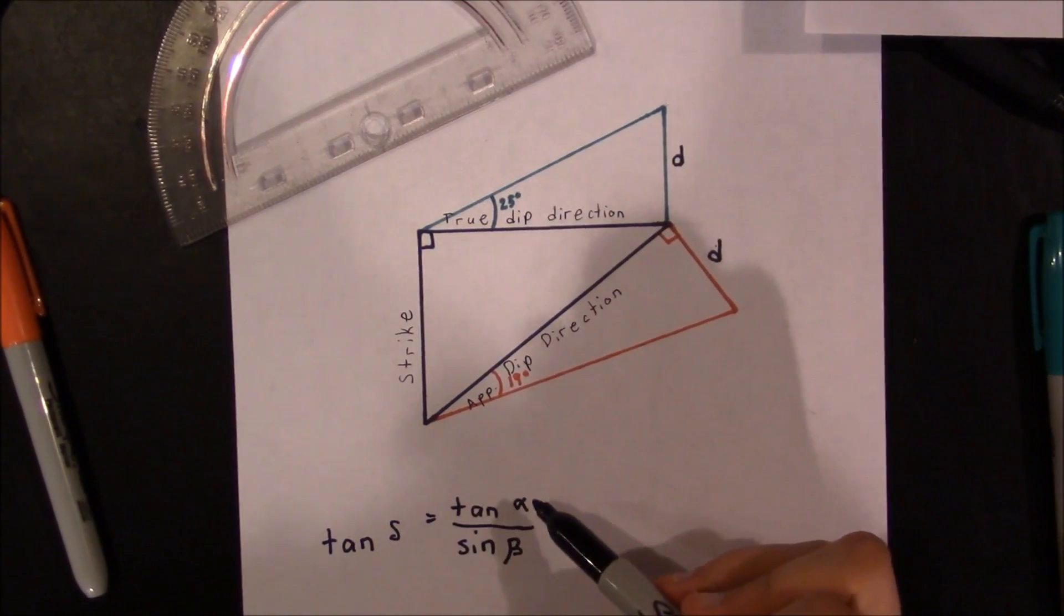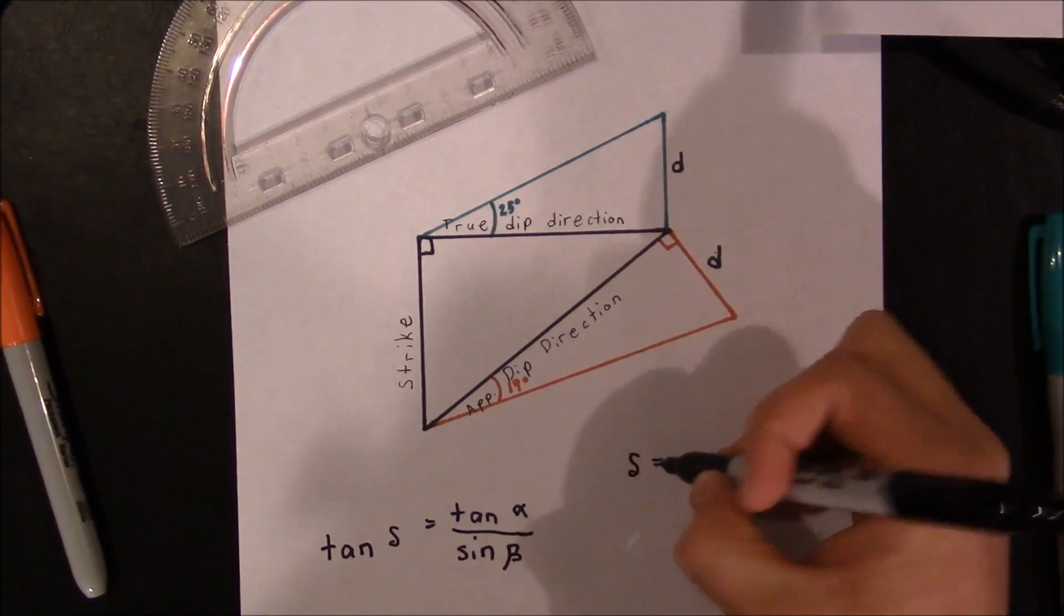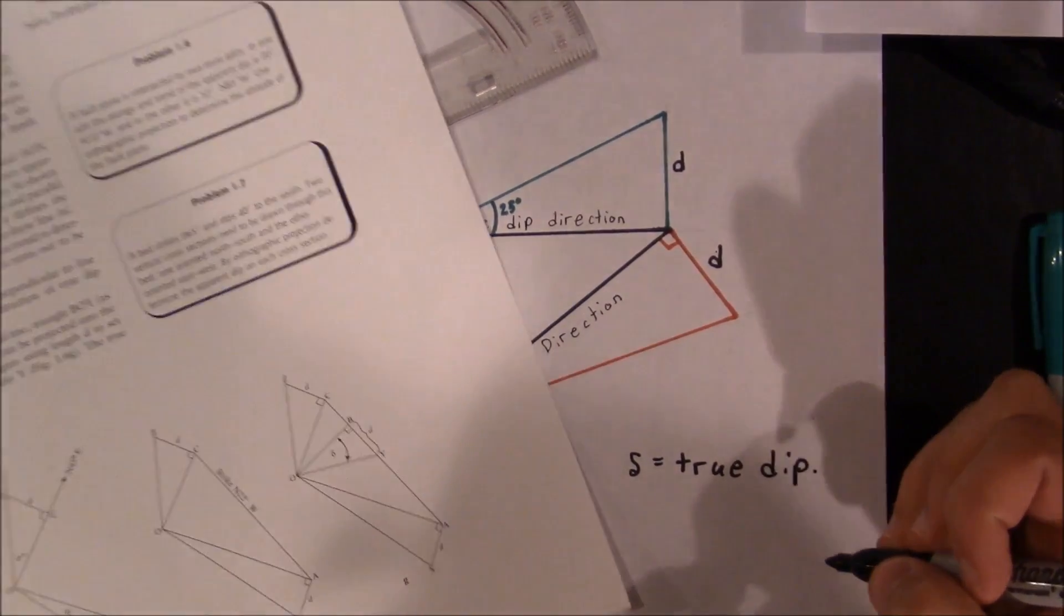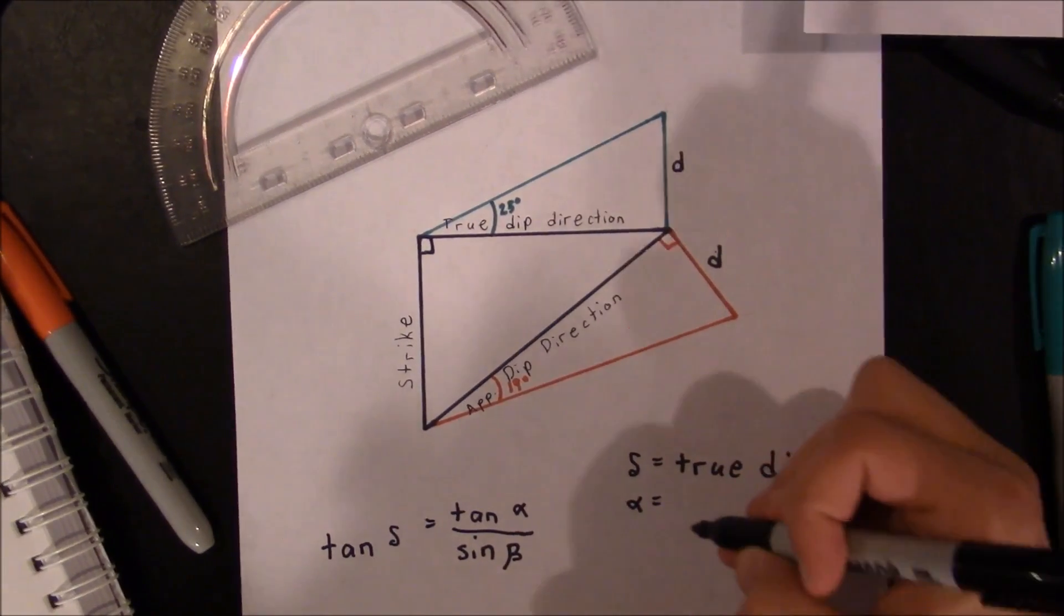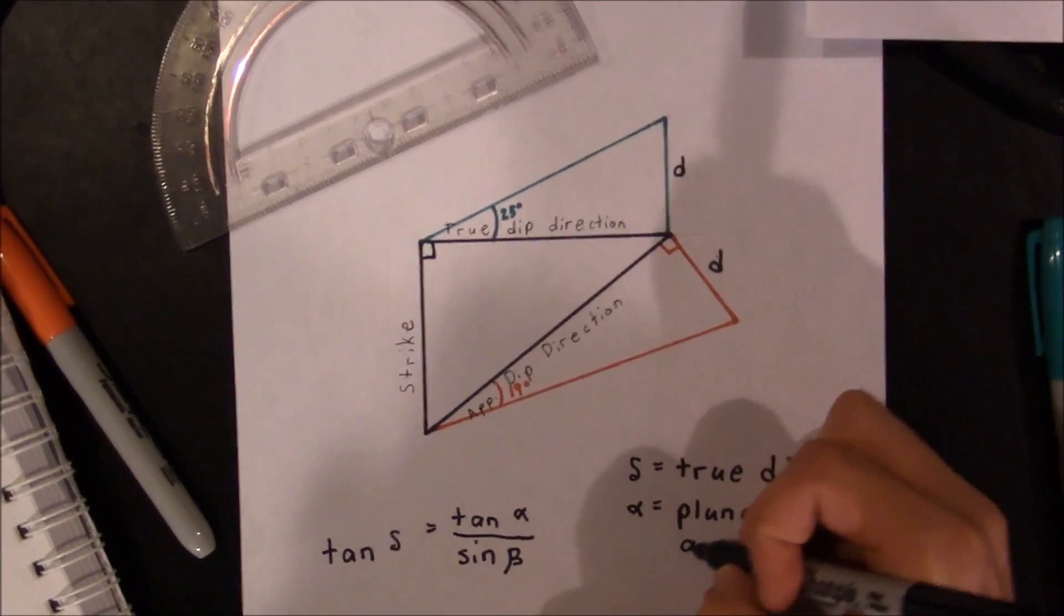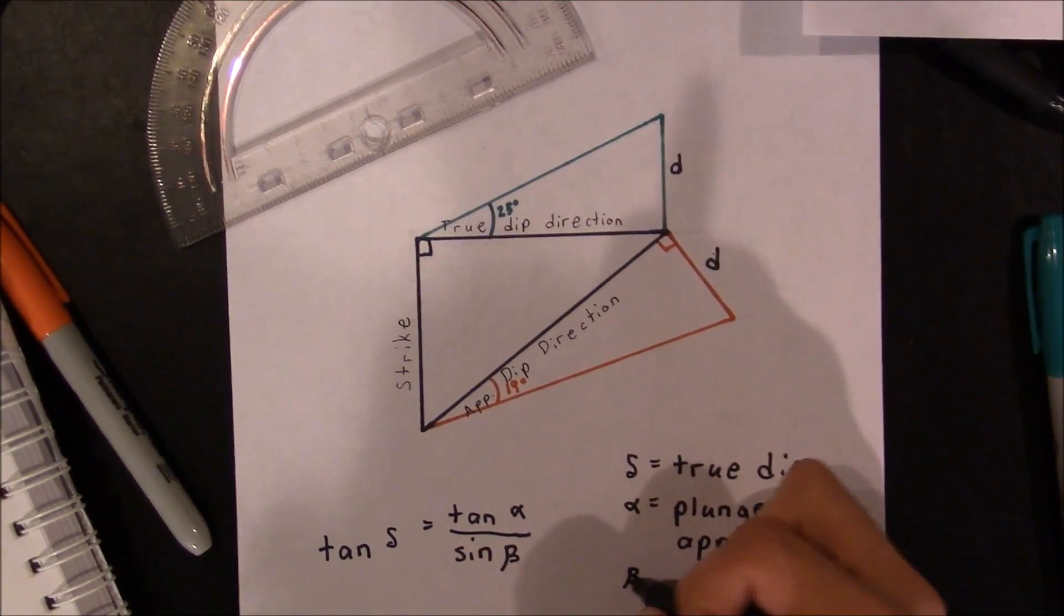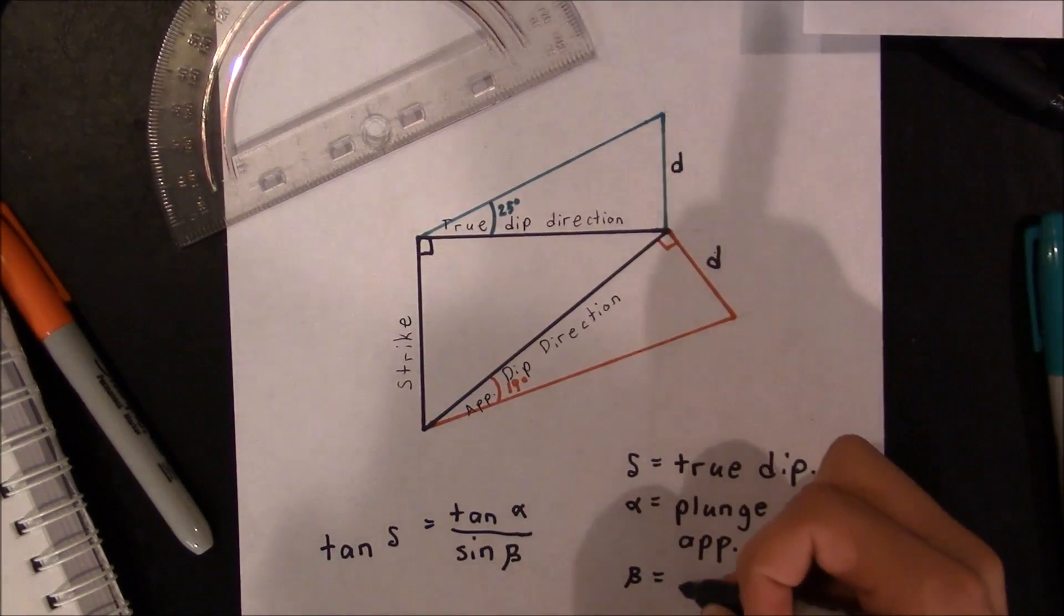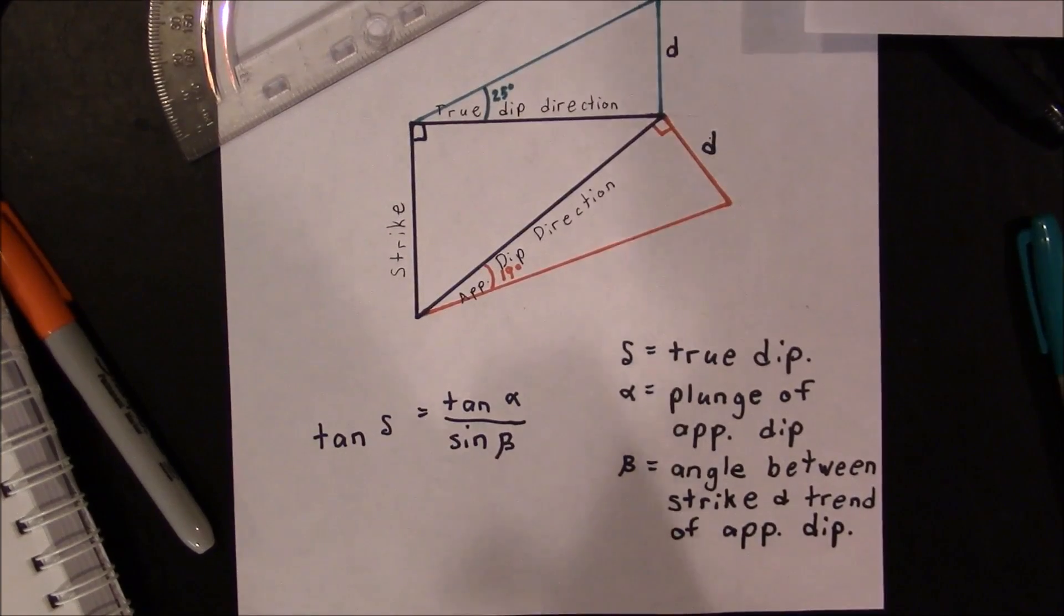tangent of delta equals the tangent of alpha over the sine of beta. And you're probably wondering, what in the world are all these angles? What is alpha, what is beta, what is delta? Well, delta is the true dip, alpha is the plunge of the apparent dip, in this case that's 19 degrees,